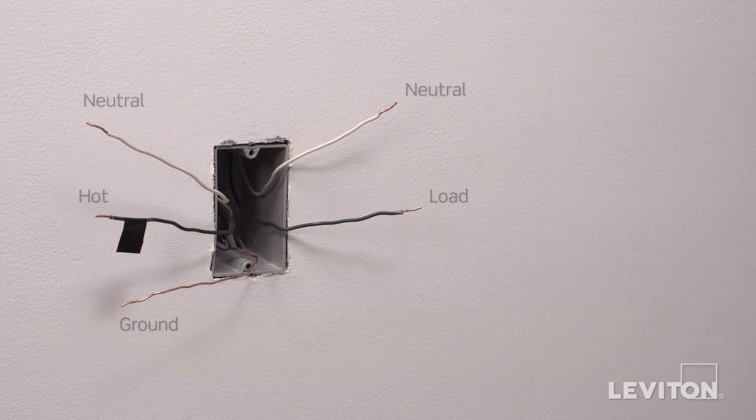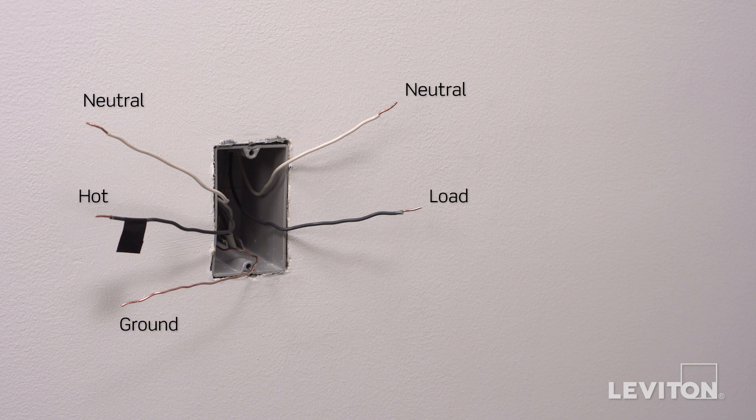Note that in this example, there is a black hot line wire, a black load wire, two white neutral wires, and a bare copper wire which is the ground. Keep in mind, the color of the wires can vary. The hot wire may be black or red. The ground wire could be green or bare copper. If you are unsure, contact an electrician.